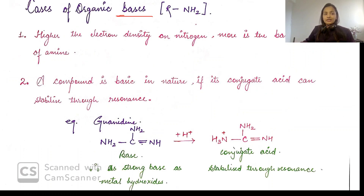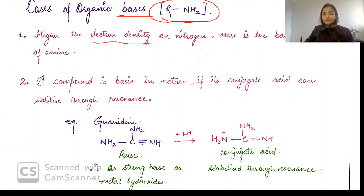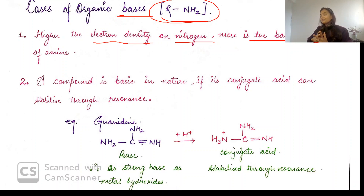In organic bases, for example amines — these are amine compounds RNH2. Higher the electron density on nitrogen, more will be the basic character. Nitrogen has a lone pair, so because of the lone pair it is basic in nature. If you have more electron density on nitrogen, you have more basic properties.